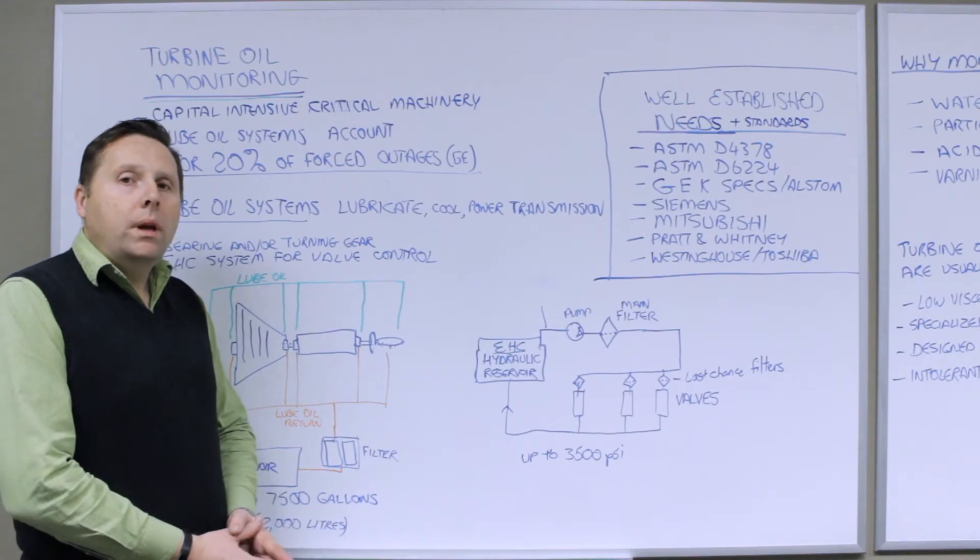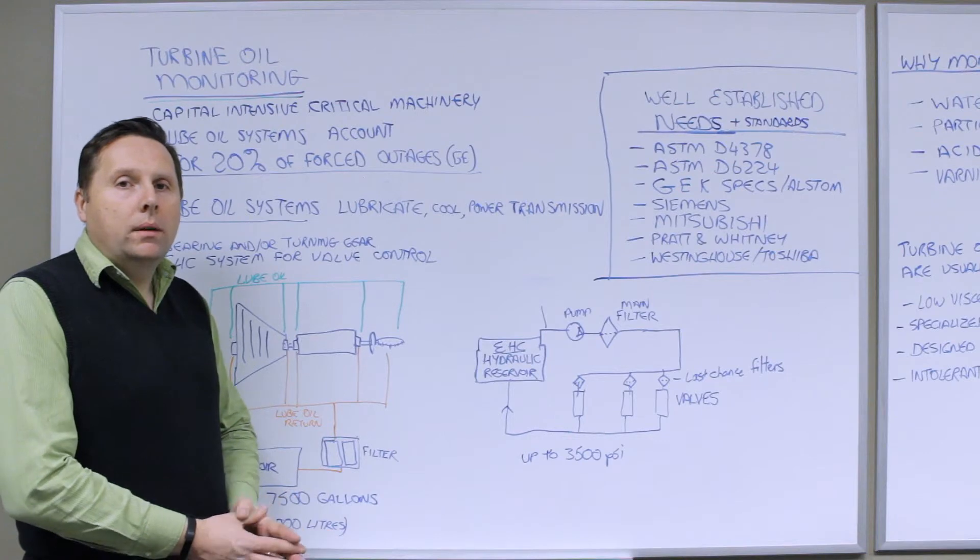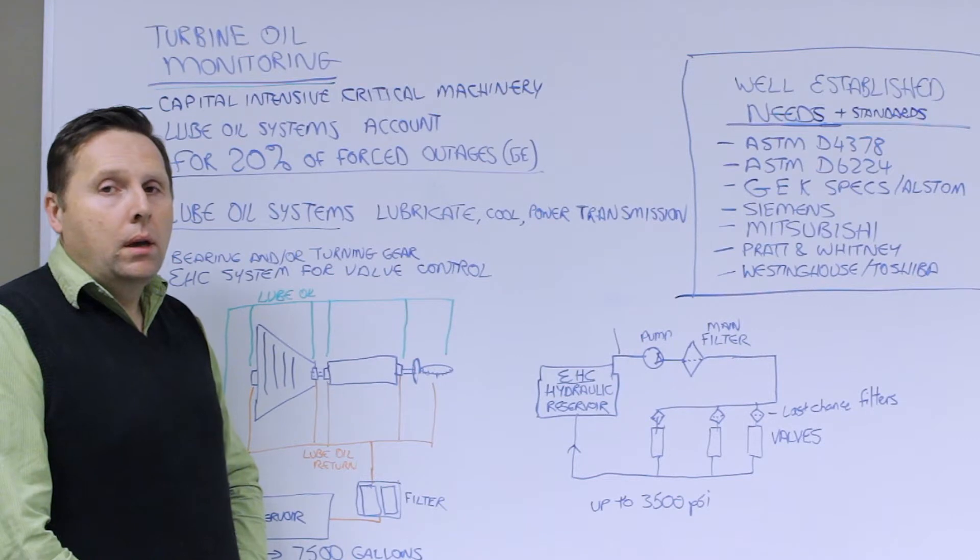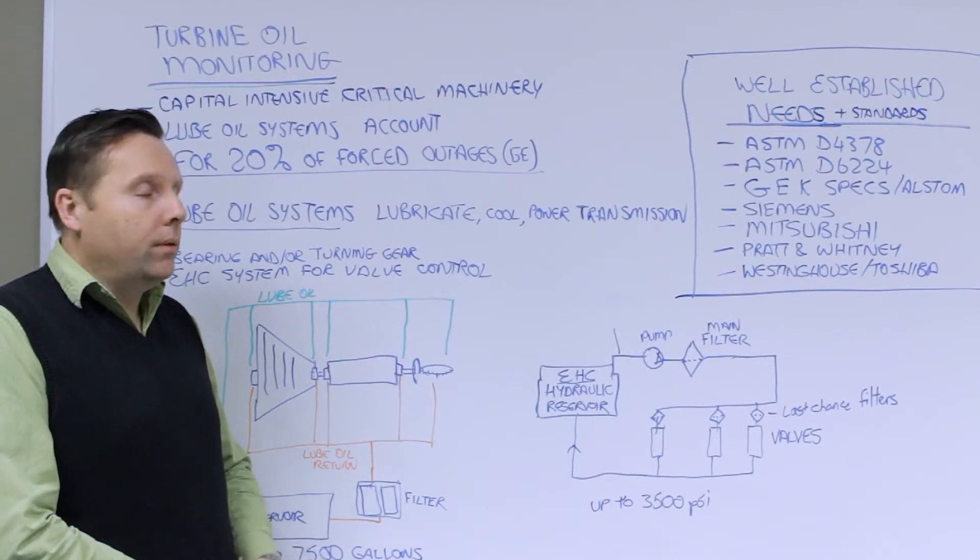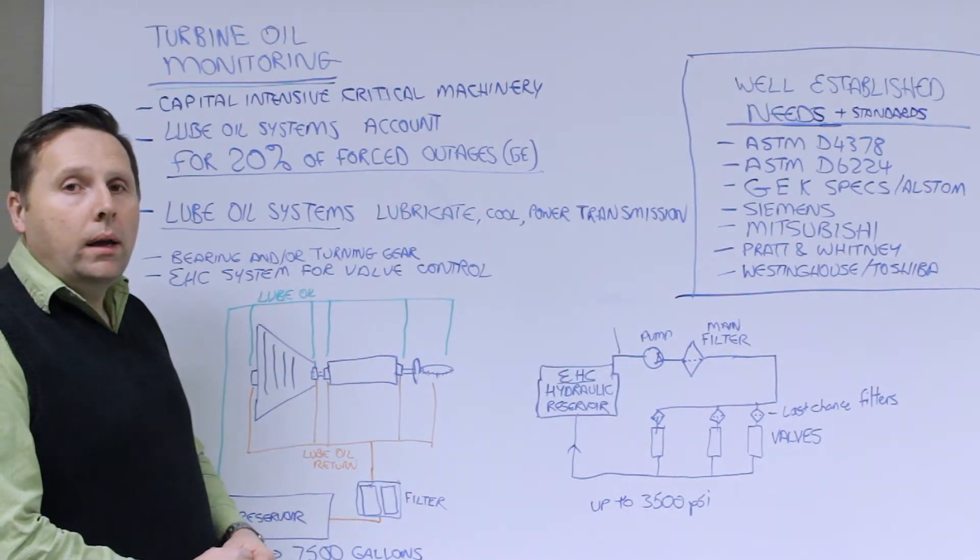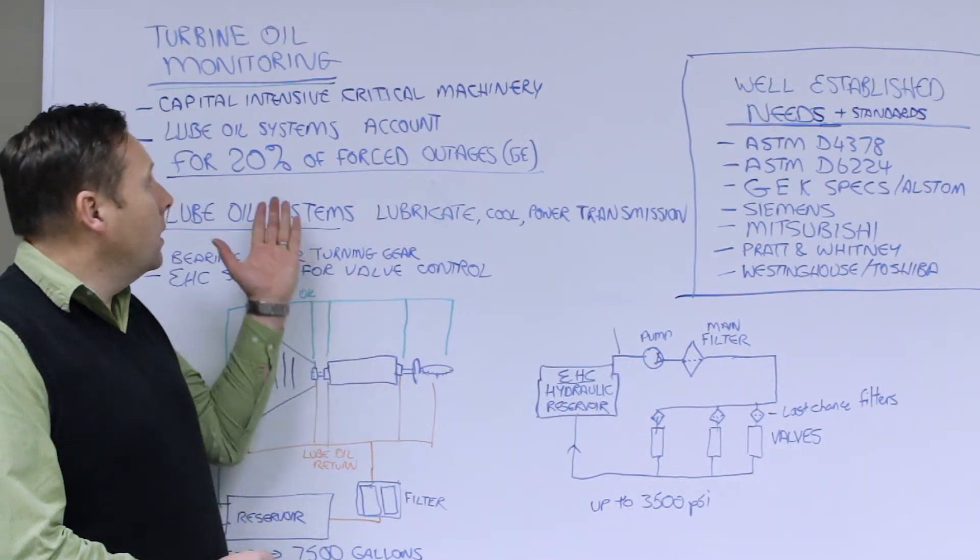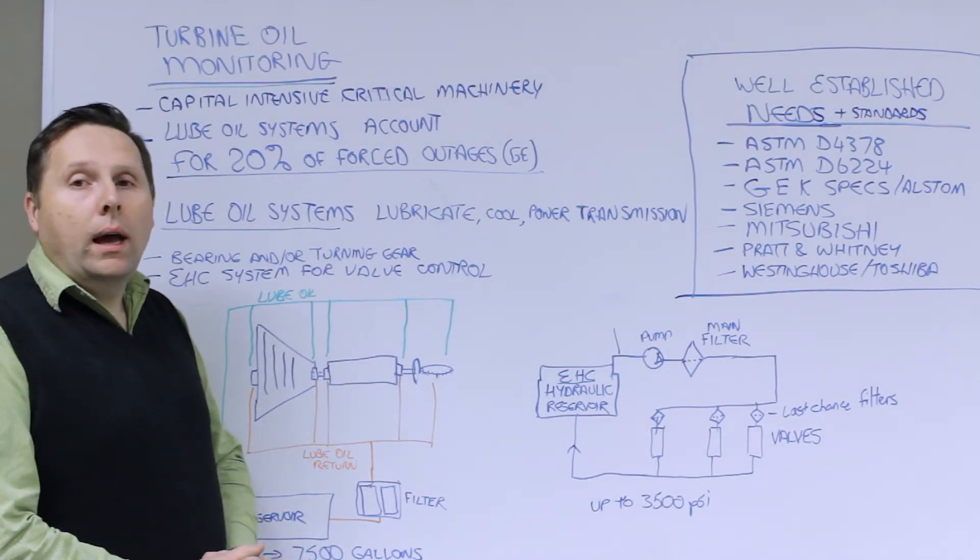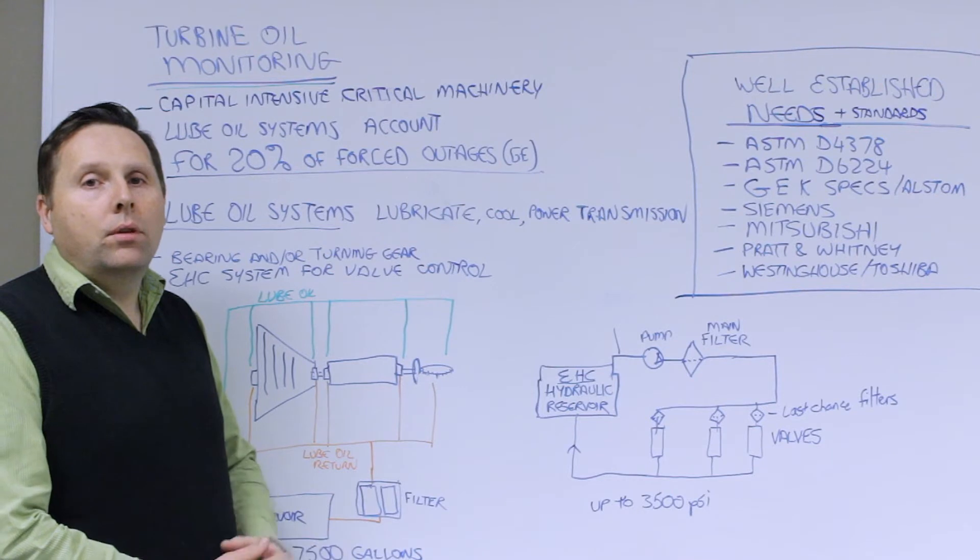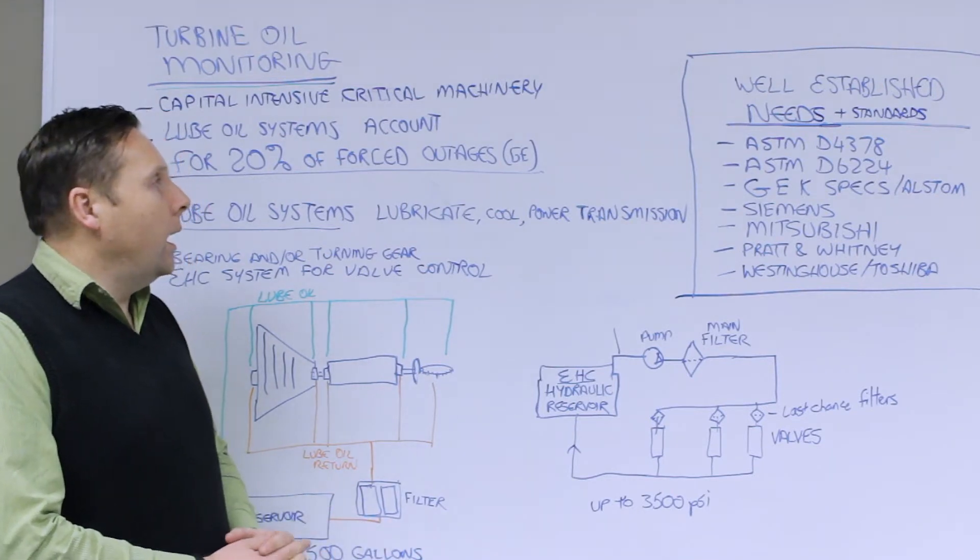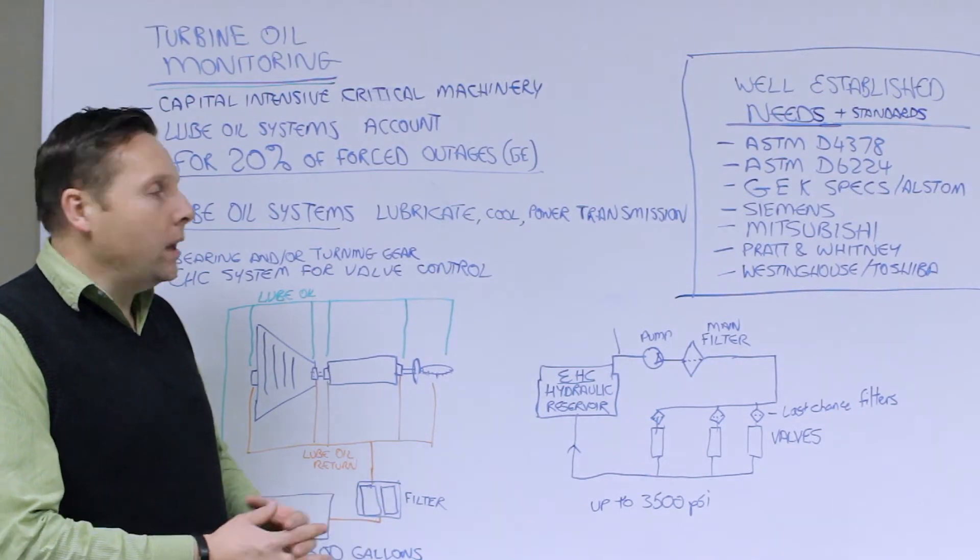So why should we worry about turbine oil monitoring? Well, turbines are capital intensive critical machinery. They're usually the largest piece of equipment on a power plant. They're producing power. It's important to keep an eye on them because 20% of potential outages, force outages, can be traced back to lube oil systems or something related to lube oil failures.